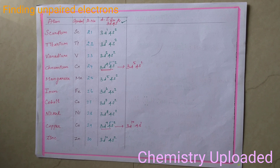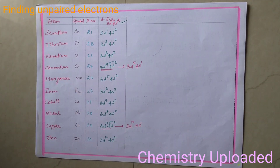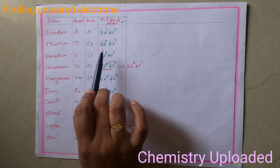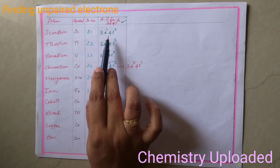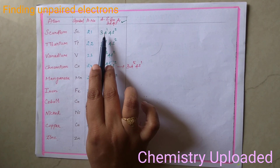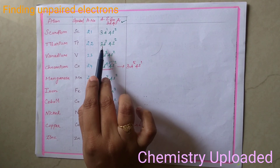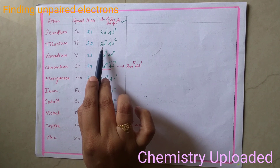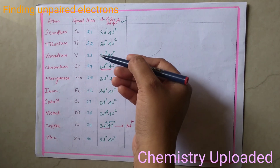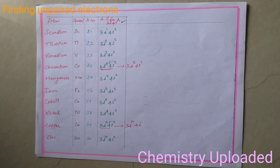For scandium, atomic number 21, the configuration is 3d1, 4s2. For titanium, atomic number 22, it is 3d2, 4s2. So the difference between these two is only one electron added in the D orbitals. Like that, all electrons are added in the D orbitals for all 10 atoms.